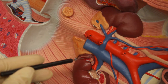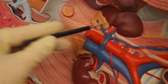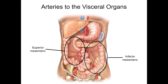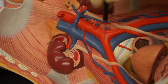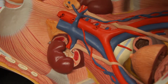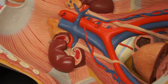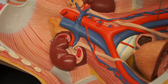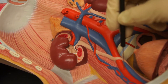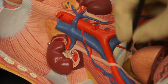Furthermore, these arteries to the kidneys are the left and right renal arteries. Here's another view of the superior and inferior mesenteric arteries. The abdominal aorta branches into the left and right common iliac arteries, and each of those branches into the left and right external iliac artery and internal iliac artery.